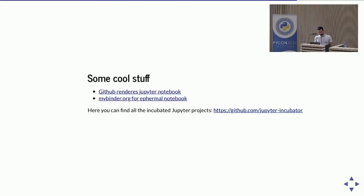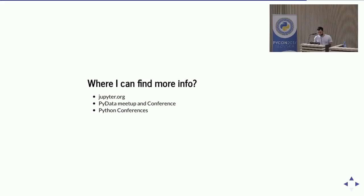You can also use Jupyter Notebook to write articles and blogs, for example with Pelican or Nikola. You can publish your Jupyter Notebook directly on GitHub, where it will be rendered by the GitHub engine. There is also the cool project called MyBinder for ephemeral notebooks — you get a Docker machine running Jupyter Notebook. There is also the Jupyter Incubator repository with many very cool projects going on. For more info, visit jupyter.org, PyData meetups, and Python conferences.